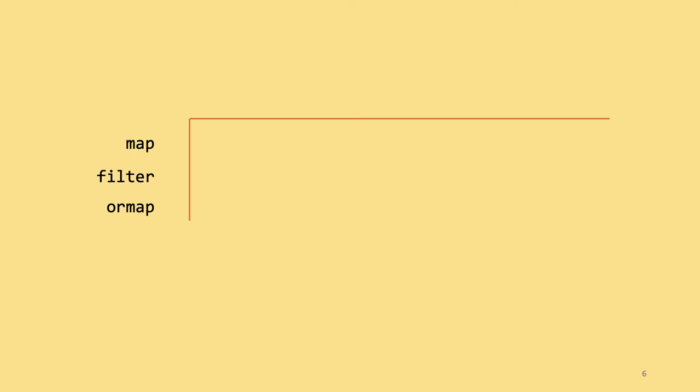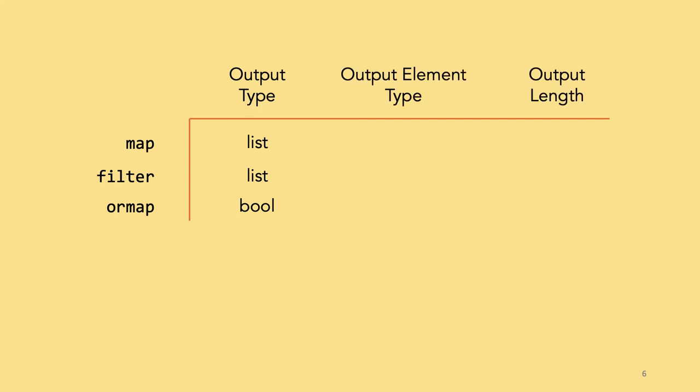Ultimately, we can build high-level summaries of behaviors along several key characteristics. For instance, let's look at three functions: map, filter, and or-map. All the functions in this paper consume lists, so let's focus on what differs. We can start by looking at their output type — two of them produce lists, the third produces a boolean. For the list producers, we can focus on further behaviors like the length and element type. Map produces output of the same length but the type can be different. Filter keeps the elements, but not necessarily all of them. In this way, we can build up a table that presents a behavioral summary of these functions. The paper has a much more detailed one.